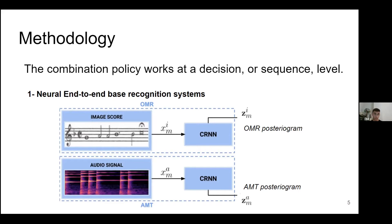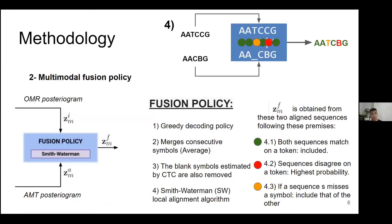On the other hand, for AMT, we have to synthesize an audio to obtain a spectrogram, specifically a CQT spectrogram. And we pass this spectrogram to our CRNN network, and we get the same, a posteriorgram. What is a posteriorgram? A posteriorgram is a matrix where we have all the probabilities of all the tokens per frame. So with these two posteriorgrams, we introduce our second step, the multimodal fusion policy.